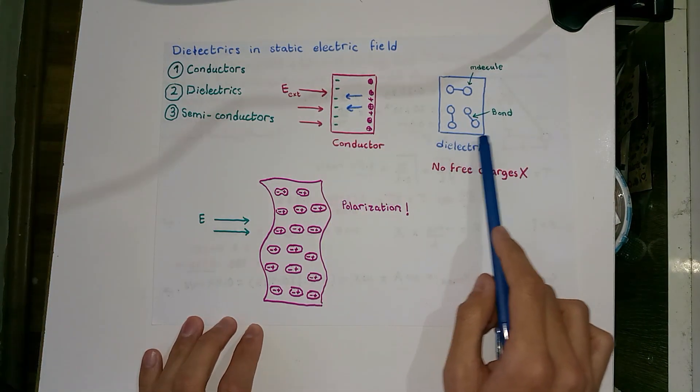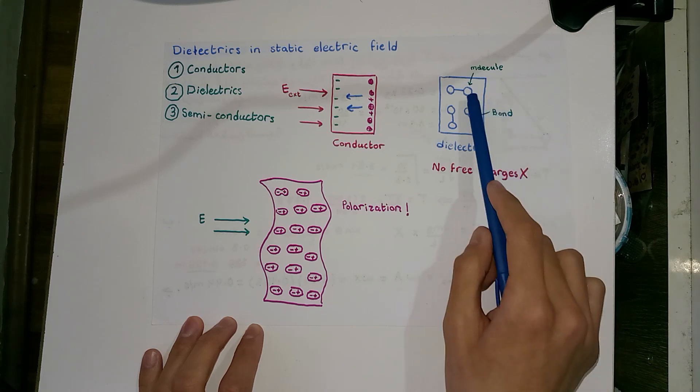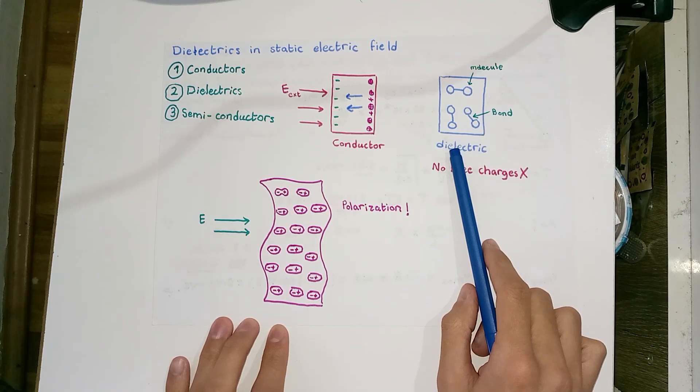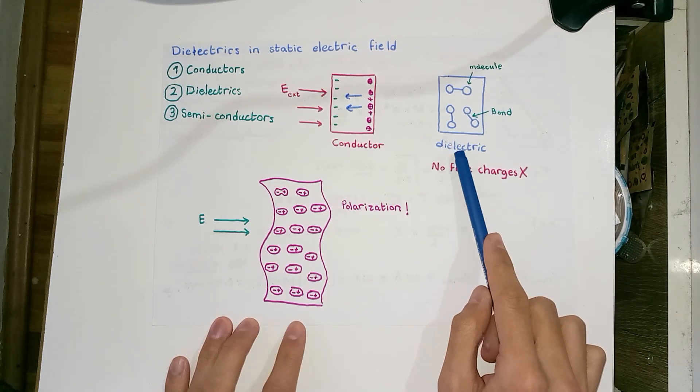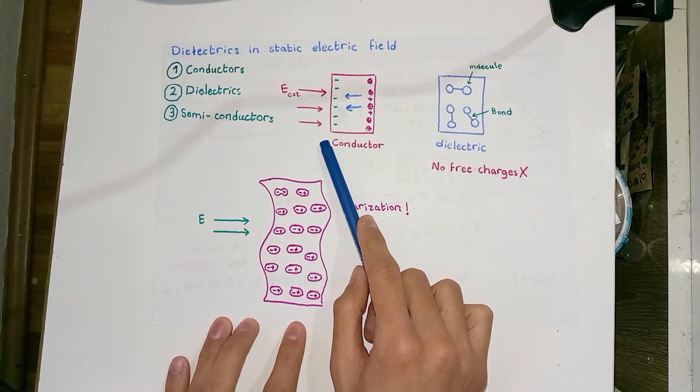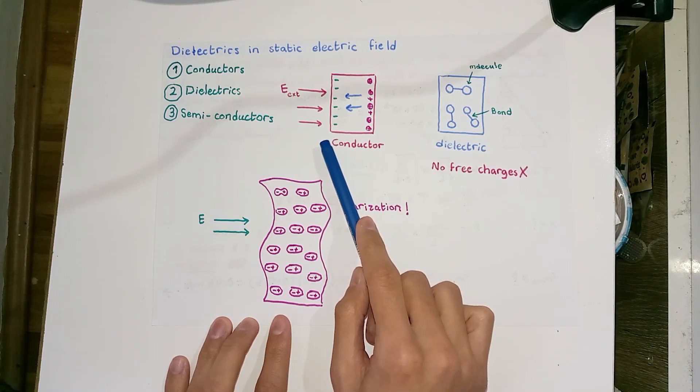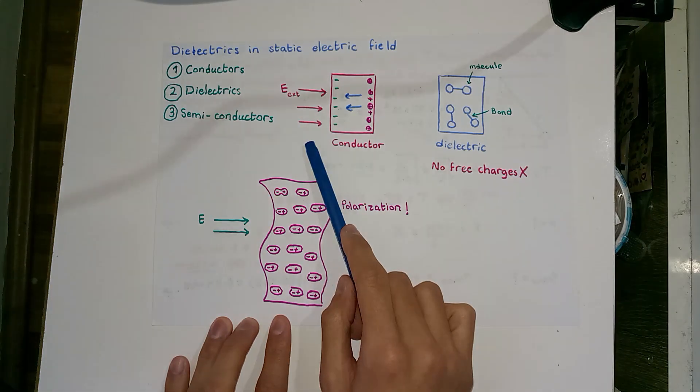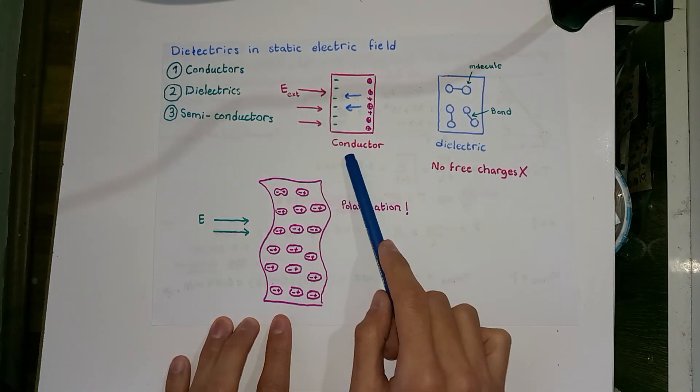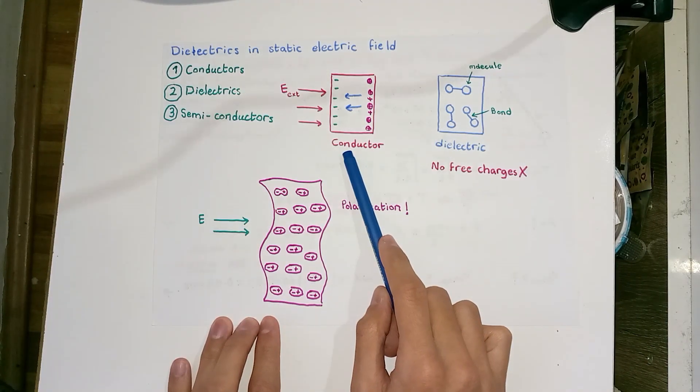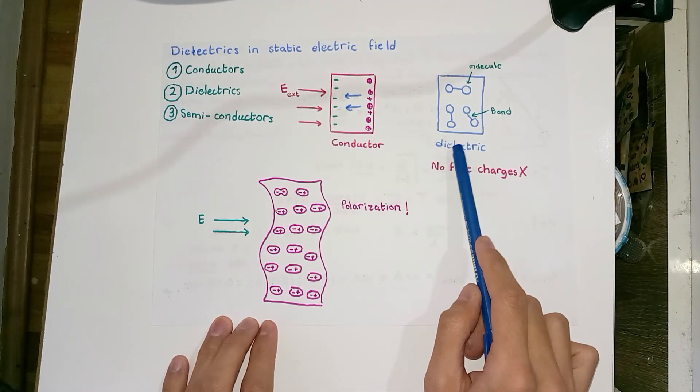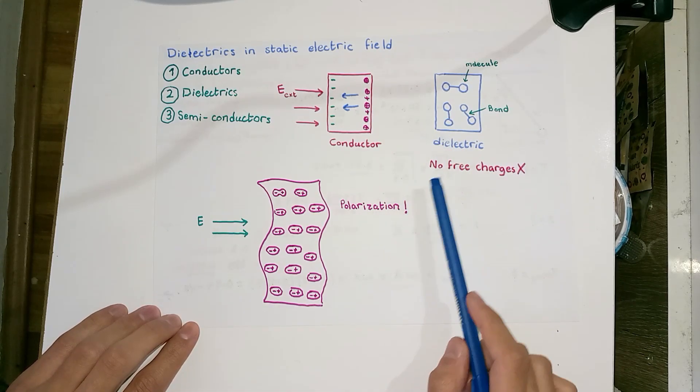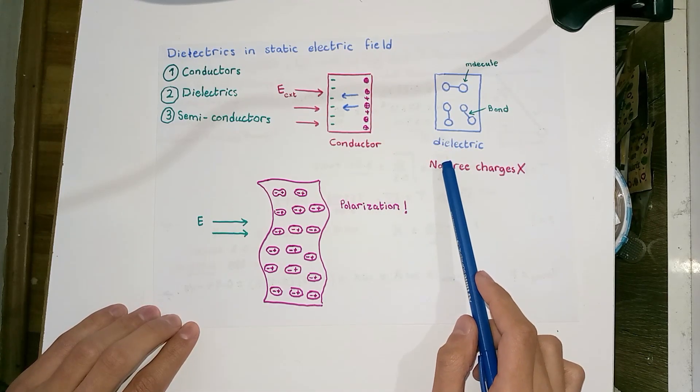Dielectrics do not contain free charges, as these charges are bounded and have no liberty to move within the body of the dielectric. Therefore, when dielectrics are placed in an external electric field, the charges cannot move and redistribute themselves to produce an internal electric field that cancels out the external one like in conductors. Indeed, the electric field penetrates into dielectrics.